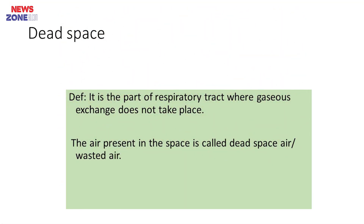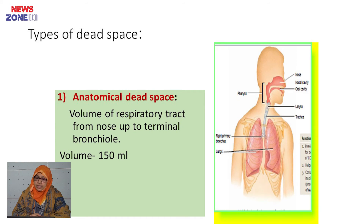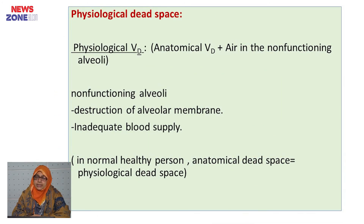Now, what is dead space? It is the part of the respiratory tract where gaseous exchange does not take place. The air present in this space is called dead space air or wasted air. There are two types: anatomical dead space, which is the volume of respiratory tract from the nose up to terminal bronchioles — about 150 mL — and physiological dead space, which equals anatomical dead space plus air in non-functioning alveoli. Non-functioning alveoli are those with destruction of the respiratory alveolar membrane or inadequate blood supply. In a normal healthy person, anatomical dead space equals physiological dead space.